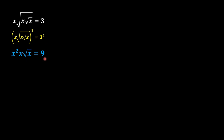Now in the next step we should simplify both of these values. As we know, if the bases are equal then their powers are added together. Applying this rule, we get x to the power 2 plus 1 equals x cubed, and the square root of x will remain, giving us x cubed times root x equals 9.